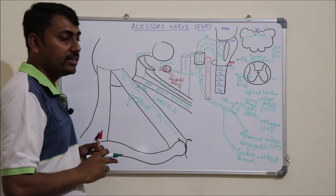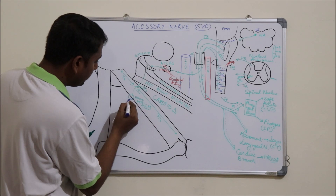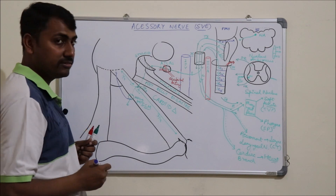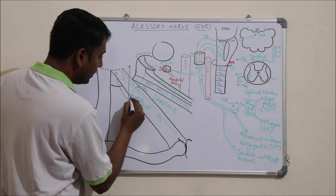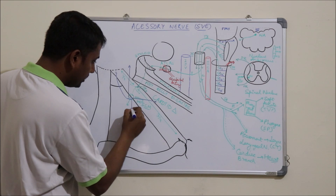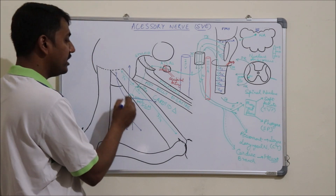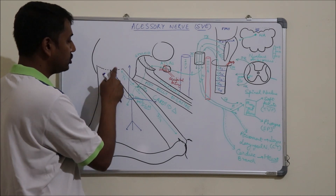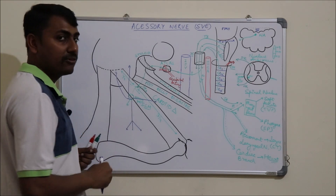At the nerve point, the spinal accessory nerve is related to four cutaneous nerves: the lesser occipital nerve (which hooks around the spinal part of the accessory nerve), the greater auricular nerve, the transverse cervical nerve, and the supraclavicular nerve (which divides into three branches).